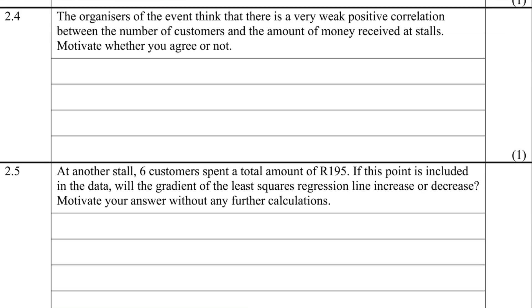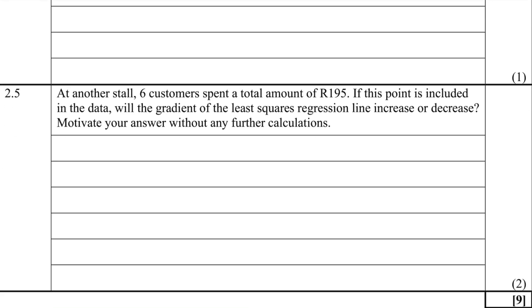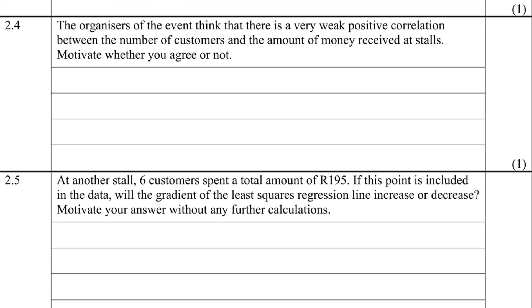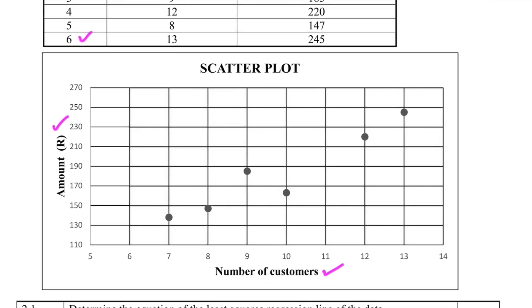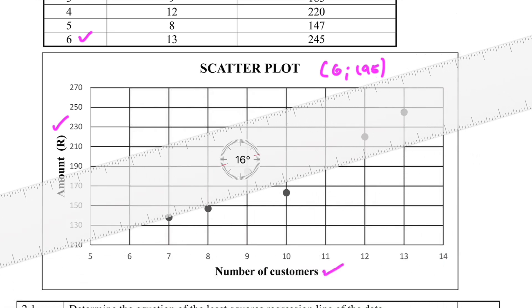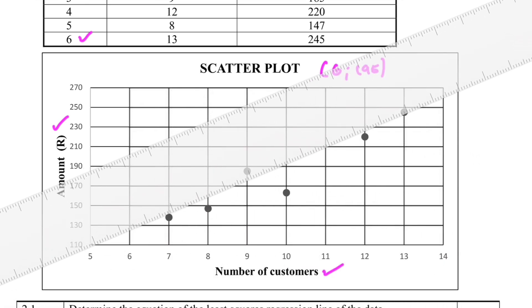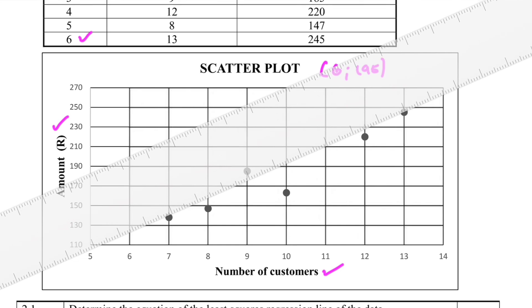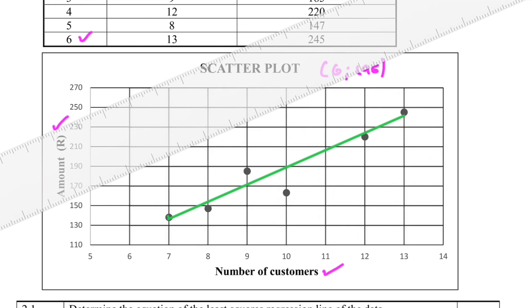2.5: At another stall, six customers spent a total of 195 rands. If this point is included in the data, will the gradient of the least squares regression line increase or decrease? Motivate your answer without any further calculation. So let's just take a look at our data here. We have six as the x and 195 as the y. So for this data, if we were to draw a line that joins these points, a line of best fit, we would have something like this. You can see that this line really goes through the most points, you would expect something like that. But look at the gradient of the line.